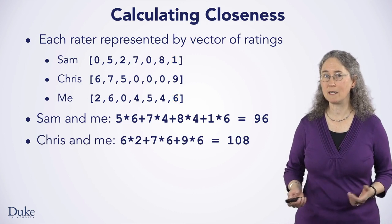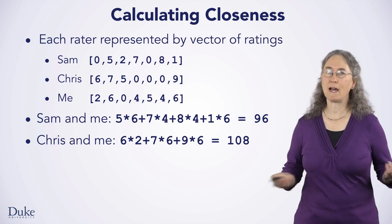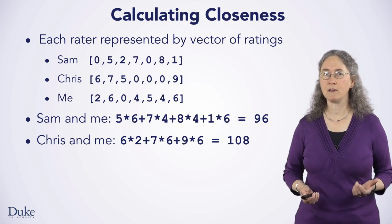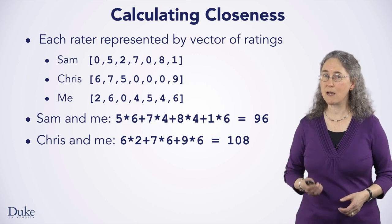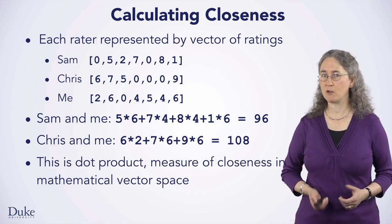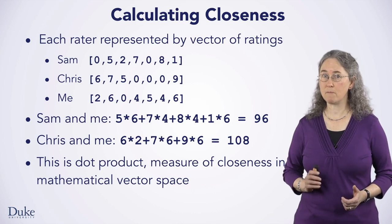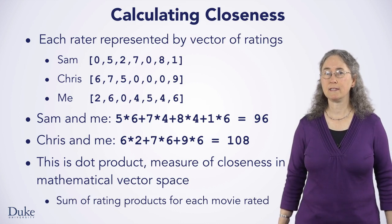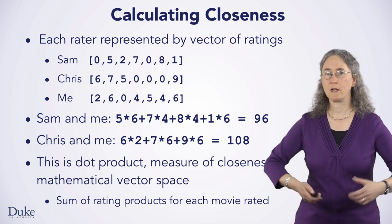The weighted similarity for Chris and me is calculated the same way. We have 3 movies we both rated. We calculate the sum of 12 + 42 + 54, which is 108. So I'm closer to Sam than I am to Chris, since the weight is a measure of closeness. This calculation is actually a dot product — a measure of mathematical closeness in a vector space. It's good to know there's a mathematical foundation for how we're calculating weighted averages. We simply calculate the sum of the product of each movie two raters rate in common.